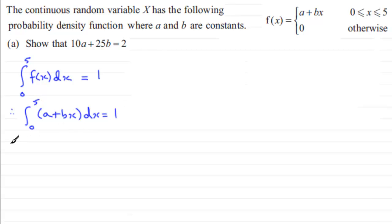And if we integrate this in the usual way just by adding X onto the constant here we get AX, and then for the BX we add 1 to the power of X and get BX to the power 2 and we divide by new power 2. And we've got our limits going from 0 to 5 and this should equal 1.